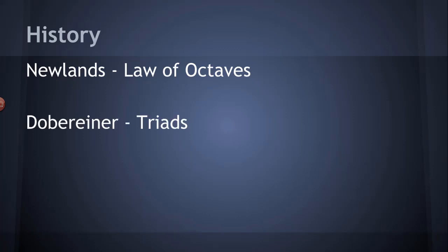Another scientist at the time, Döbereiner, believed you could group elements into groups of three based on similar properties. He grouped together elements like lithium, sodium, and potassium, which are all very similar in their physical and chemical properties. But while it was a neat idea, it didn't fit all of the known elements — some didn't fit into groups of three, and some seemed to fit with groups that already had three in them.